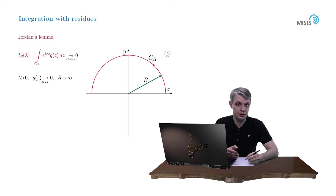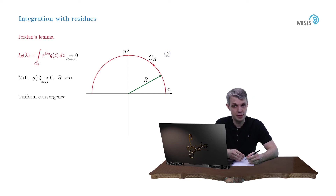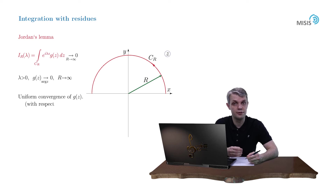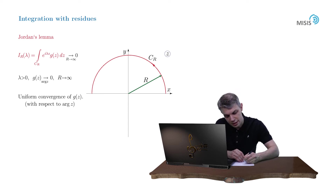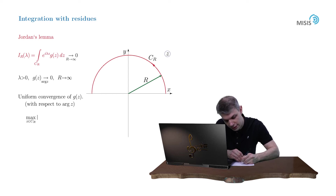First of all, I need to clarify what the uniform convergence of g of z really means. In this context, it's equivalent to the following statement: we say that the function tends to zero uniformly with respect to its argument, as the radius of the arc tends to infinity, if the maximum value of its modulus on the arc tends to zero as the radius of the arc tends to infinity.